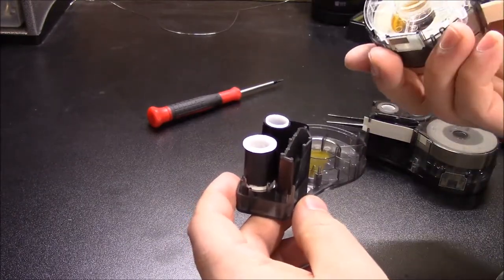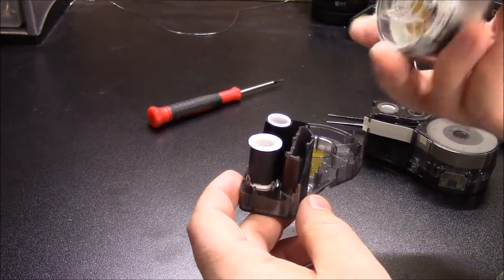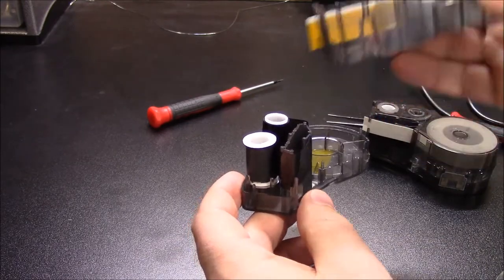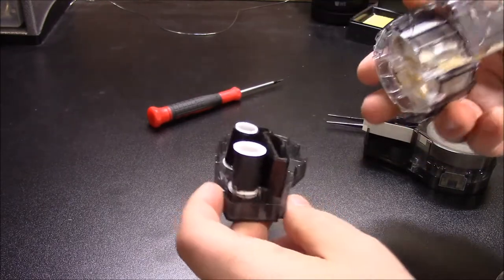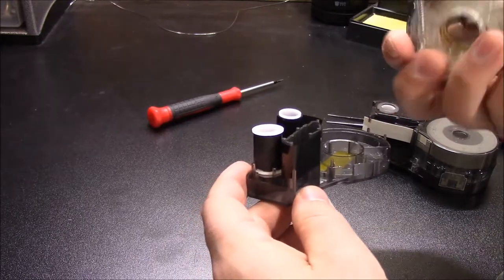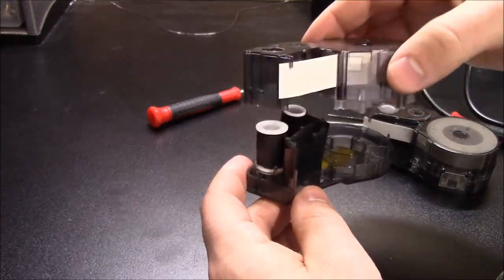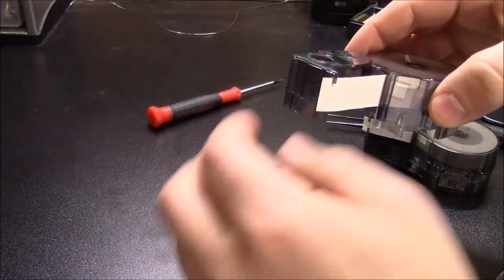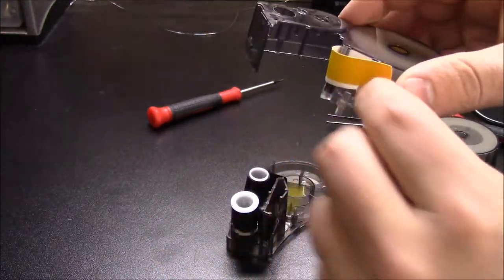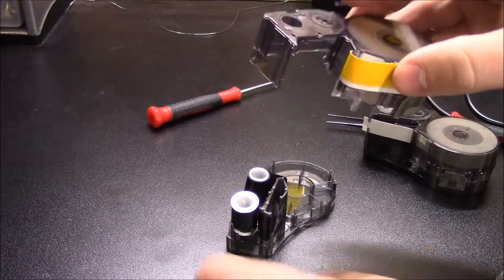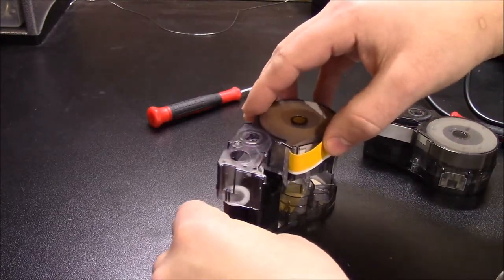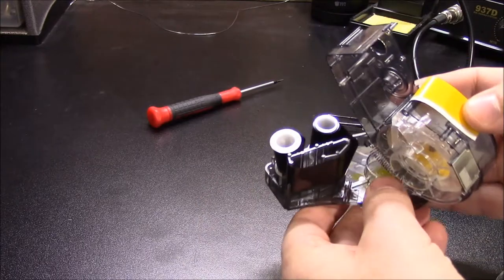So then you're going to want to take your other, your actual ribbon or your material. This is a ribbon, this is a material. And then you're going to want to place it on here. And when you do it, it kind of helps out a little better if you just leave this out and you just kind of put it on like that.